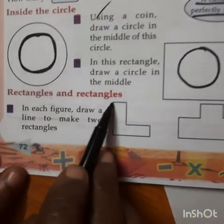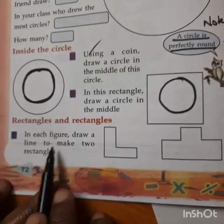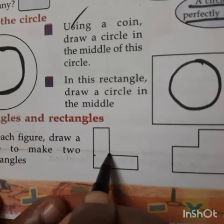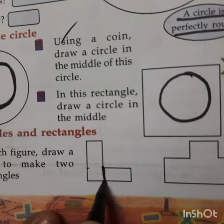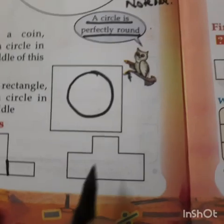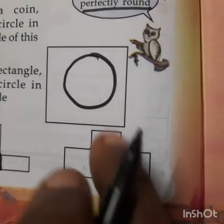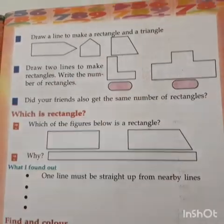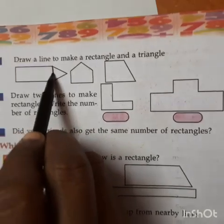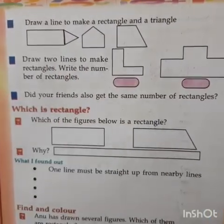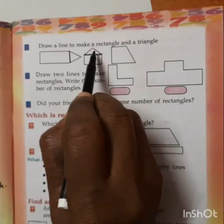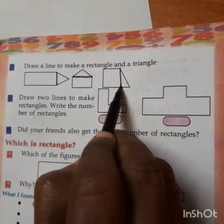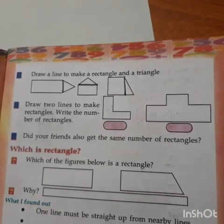Then rectangles: in each figure draw a line to make two rectangles. Here we draw a line, then we get a rectangle. Here we draw a line and there are two rectangles. Then draw a line to make a rectangle and a triangle — we get a triangle and a rectangle. Here we draw a line like this and we get a triangle and a rectangle.